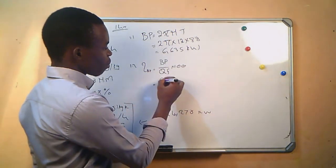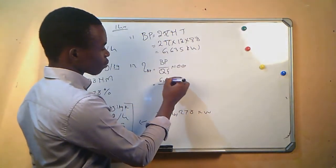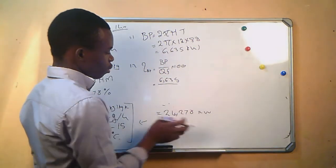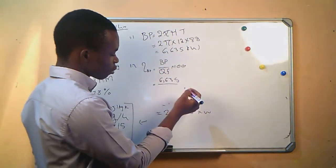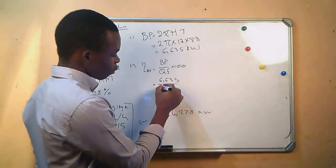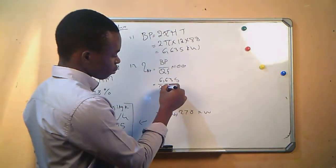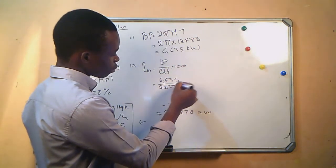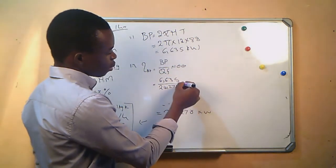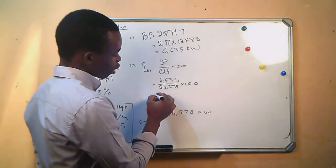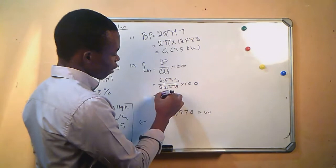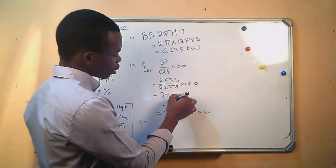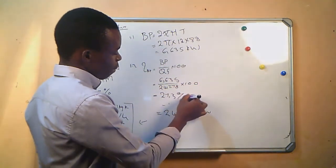Using our brake power and the heat energy from the fuel, the brake thermal efficiency equals (6.635 / 24.278) × 100, which gives us 27.3%.